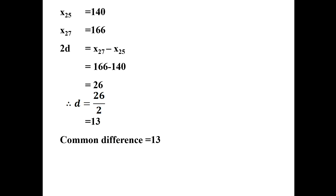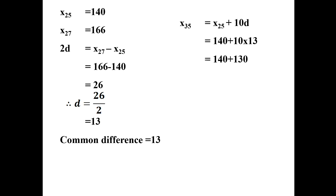Now we find the 35th term. The 35th term equals the 25th term plus 10 times the common difference. With the 25th term as 140 and common difference 13: 140 plus 10 into 13 equals 140 plus 130, which equals 270. So the 35th term is 270.